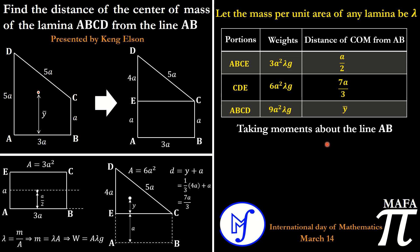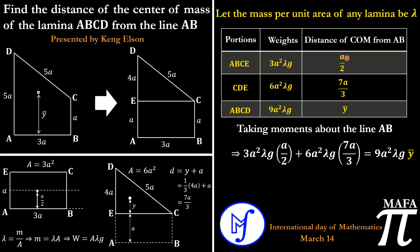We now take moments about line AB, which is the line we are finding the distance of the center of mass from. Moment equals weight times perpendicular distance. Since line AB is horizontal, the vertical distances are the perpendicular distances. The sum of moments for the individual portions equals the moment of the whole body. So: 3a²λg times a/2 plus 6a²λg times 7a/3 equals 9a²λg times y-bar.